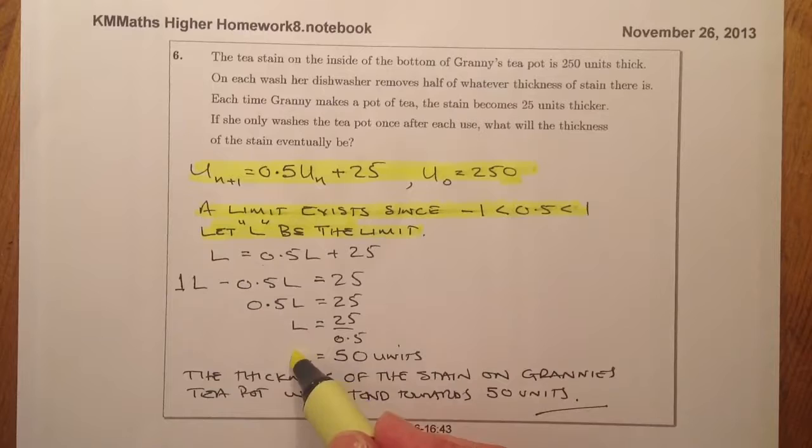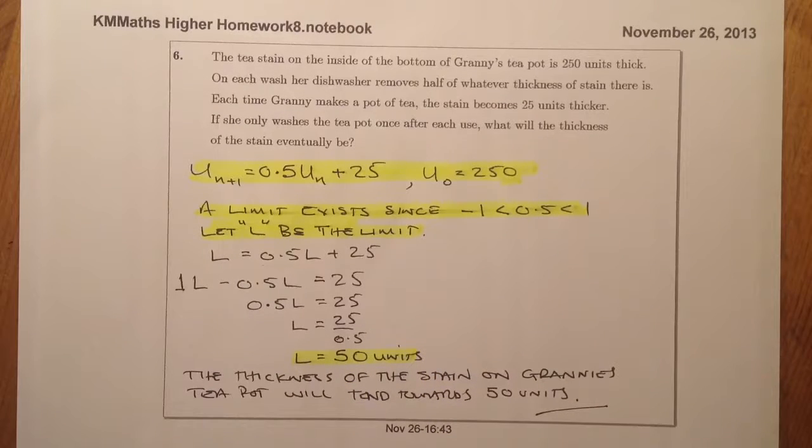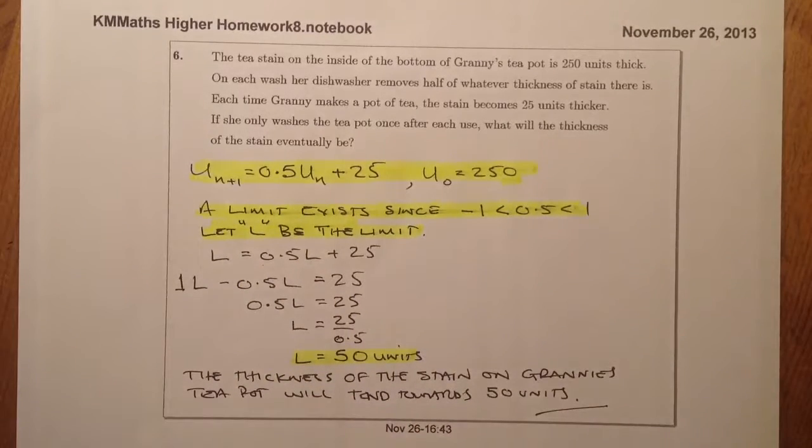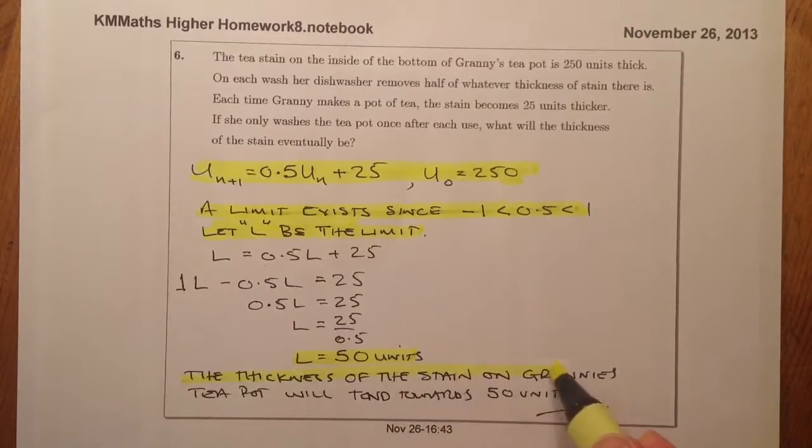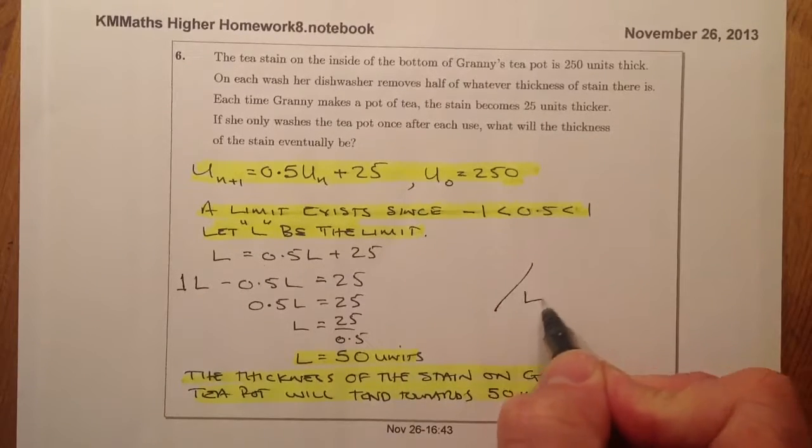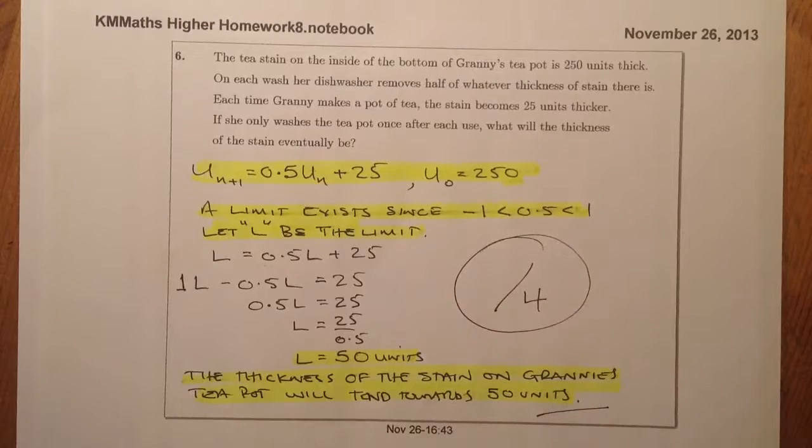And another mark for getting the limit. So working that through. You could also use the other formula for it. I usually just substitute L in just to work that through. And finally, I'd like one mark for making a statement that puts the question into context. So looking at that one there, looks like a four mark question. You can do this. Thank you.